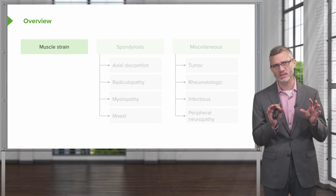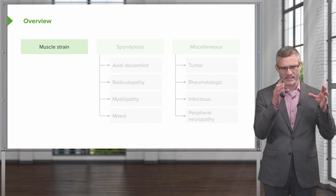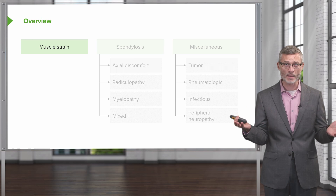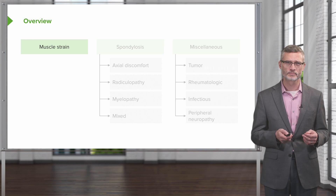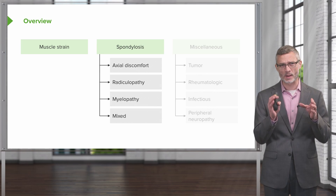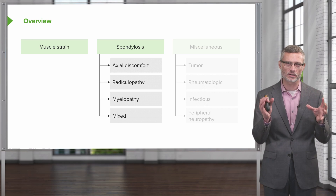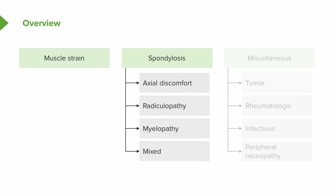Whenever a patient has low back pain, I like to divide it into three broad categories of potential disease. Perhaps the most common is just a simple muscle strain. Next up is spondylosis — a broad category that simply means disease of the spine. There could be just axial discomfort, radiculopathy involving the nerve roots, myelopathy with encroachment on the spinal cord itself, and oftentimes a mixture of all of the above.